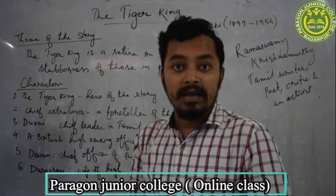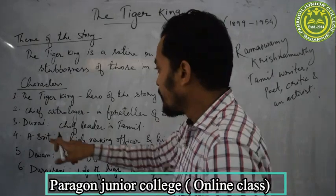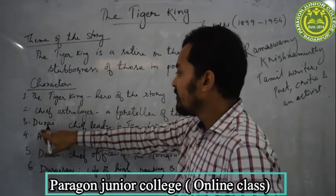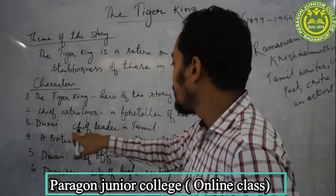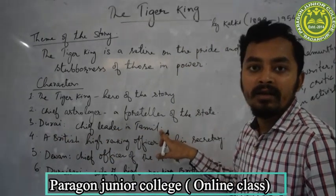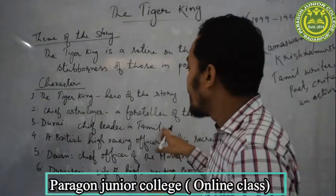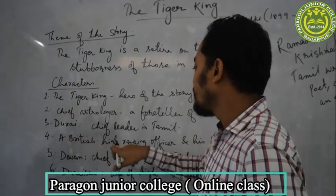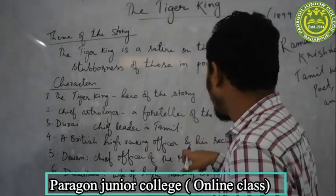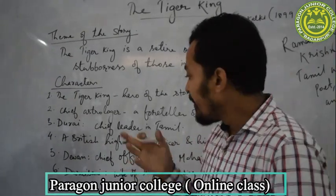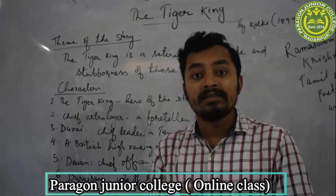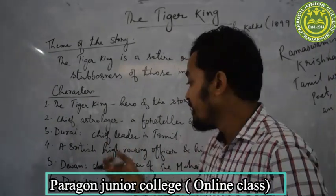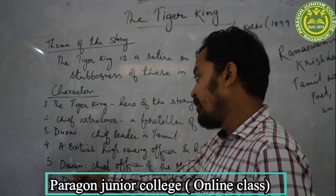Coming to the last part of the story, we will see the king died actually because of a tiger — but that was a wooden toy tiger. The next character is Durai, which means Chief Leader in Tamil. He also has a role in this story. The next character is a British High Ranking Officer and his secretary, who also plays an important role in the story.